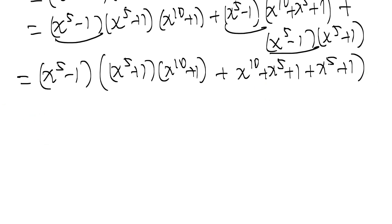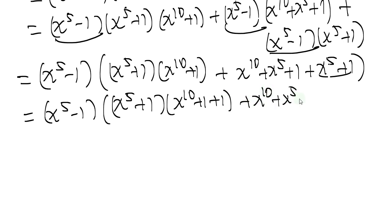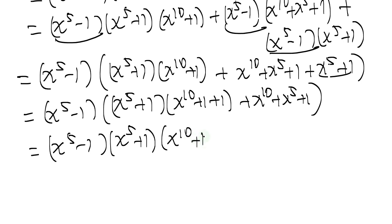We can now factor (x to the 5 plus 1) from the bracket as well, giving us (x to the 5 minus 1)(x to the 5 plus 1) times (x to the 10 plus 1 plus 1 plus x to the 10 plus x to the 5 plus 1). Simplifying inside the bracket: x to the 10 plus 2, plus x to the 10 plus x to the 5 plus 1, which gives (x to the 10 plus 2x to the 5 plus 3) inside.